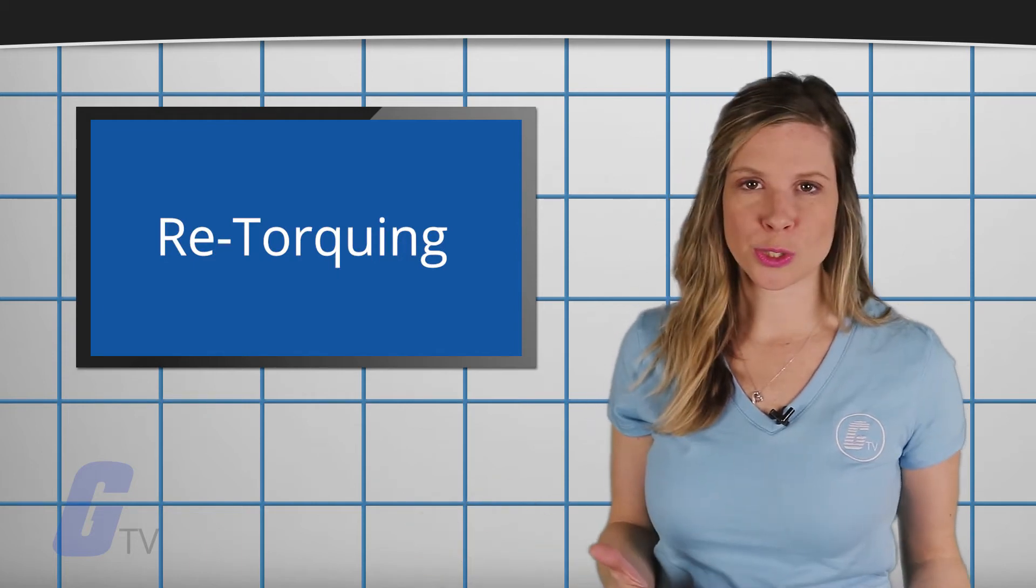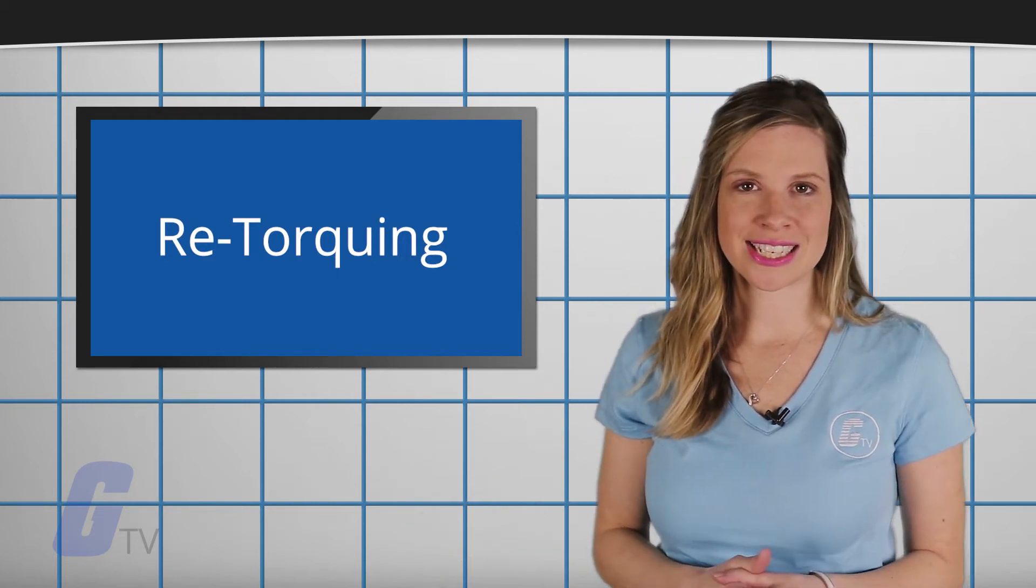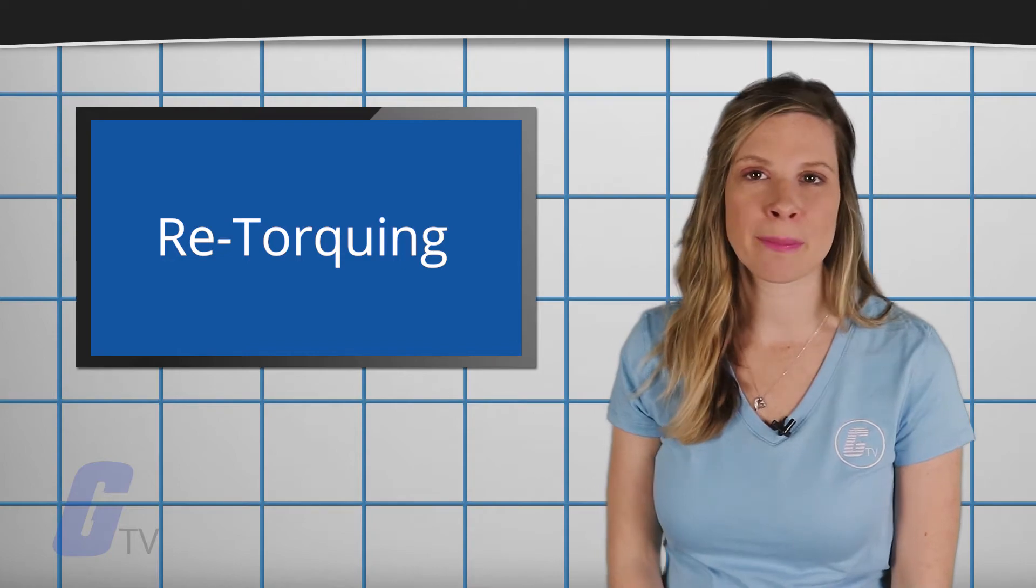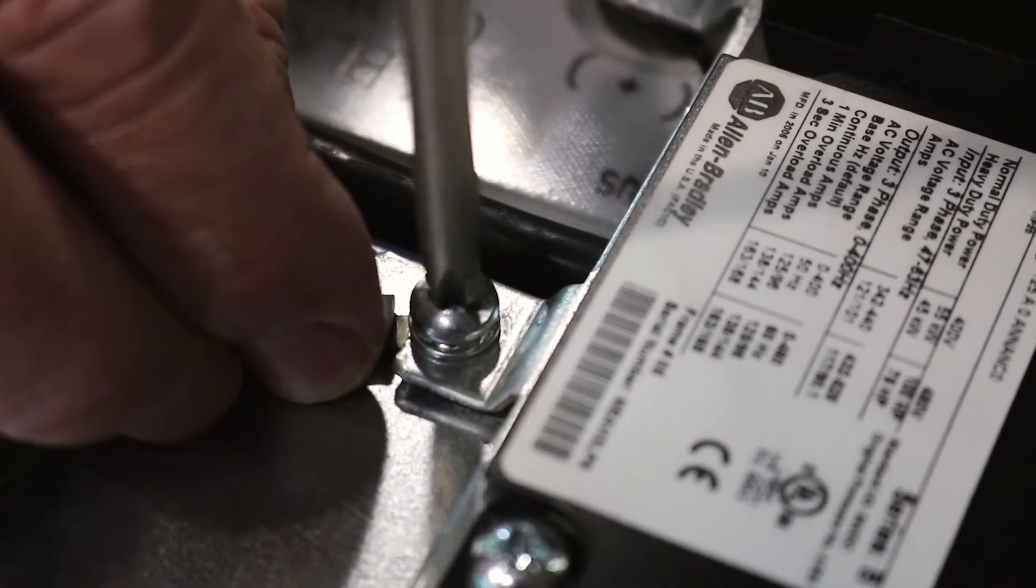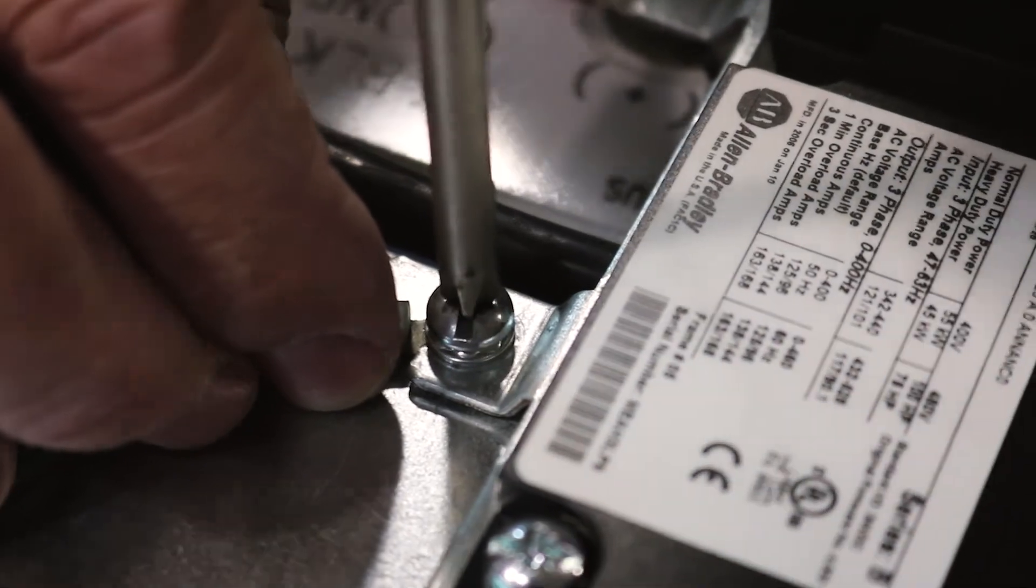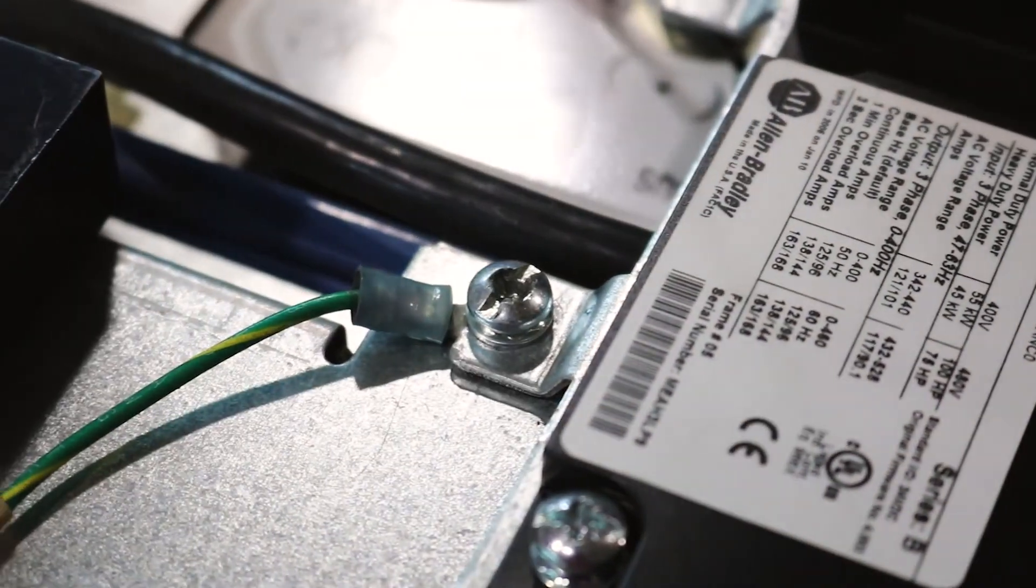Loosening and then re-torquing a screw can also reduce its elasticity, reducing its clamping power. Unless you have a good reason to believe that a screw should be re-torqued, you're usually better off leaving them alone if everything is working properly.